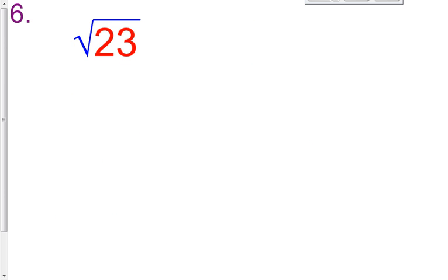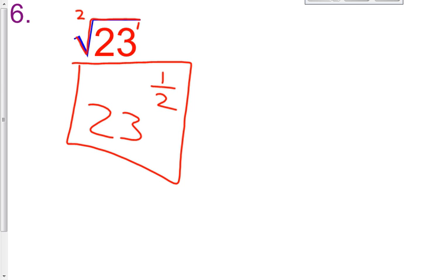Number 6, the square root of 23. When there is no index written, you assume it is the square root. When there is no exponent given, you assume it is the first power. So it is 23 raised to the numerator of 1, denominator of 2: 23 raised to the 1 half power.